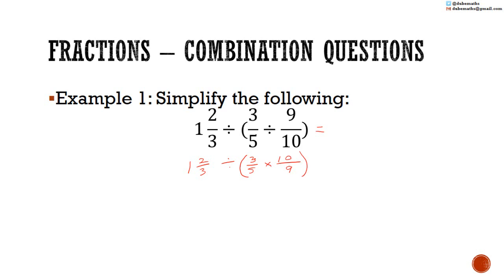3 and 9 can cancel: 3 into 3 is 1, 3 into 9 is 3. 5 into 5 is 1, 5 into 10 is 2. So 1 multiplied by 2 is equal to 2, and 1 multiplied by 3 is equal to 3. This gives us 1 and 2 thirds divided by 2 over 3.